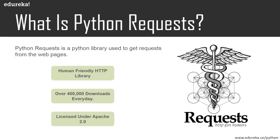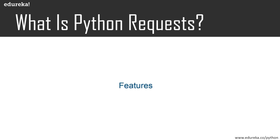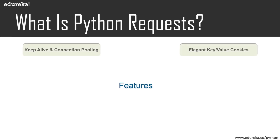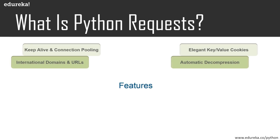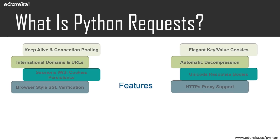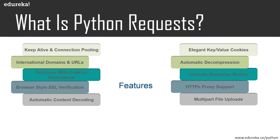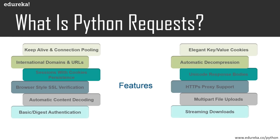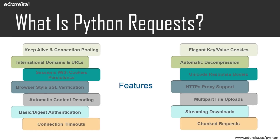Now let's take a look at the advanced features that Python requests comes with. We have keep-alive and connection pooling, elegant key-value cookies, international domains and URLs, and automatic decompression. There are also sessions with cookie persistence, Unicode response bodies, browser-style SSL verification, and HTTPS proxy support. Additionally, there is automatic content decoding, multi-part file uploads, basic authentication, streaming downloads, connection timeouts, and chunk requests.